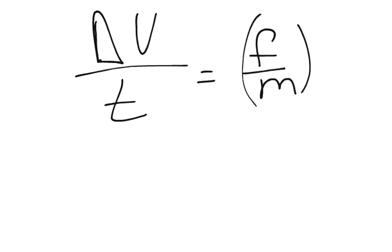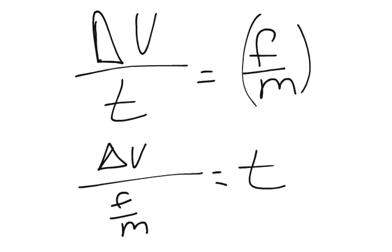So what we get is our change in velocity over time equals force divided by mass. And this will be expressed in terms of meters per second squared. So we can solve for our time by saying that the change in velocity over force over mass equals time. So at this point you can plug and play, but you want to be sure that you change your 78 kilometers per hour. You want to change that to meters per second.